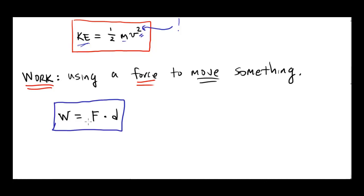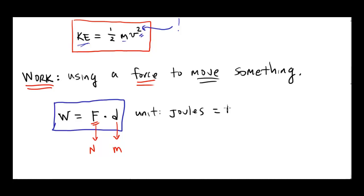The unit for work is also Joules — the exact same unit as energy — which shows how intricately connected work and energy are. Force is measured in Newtons and distance in meters, so a Joule can be rewritten as a Newton times a meter. If you exert a force of one Newton to move an object one meter, you've done one Joule of work.